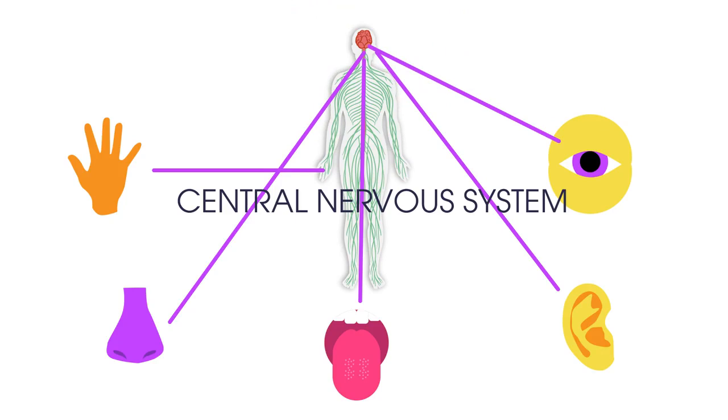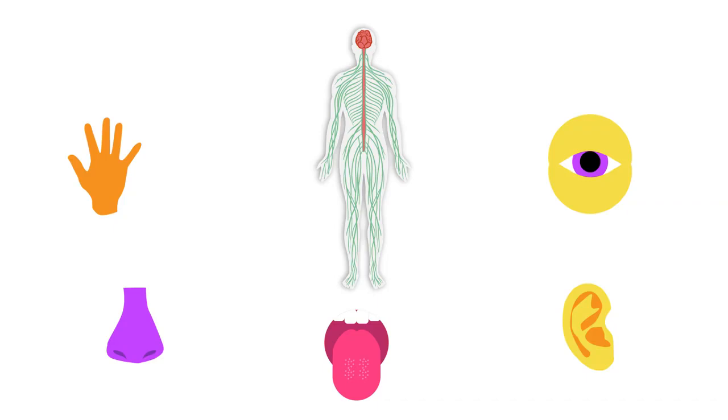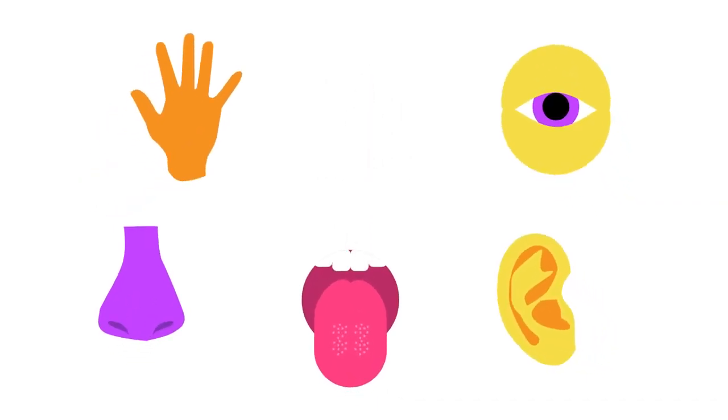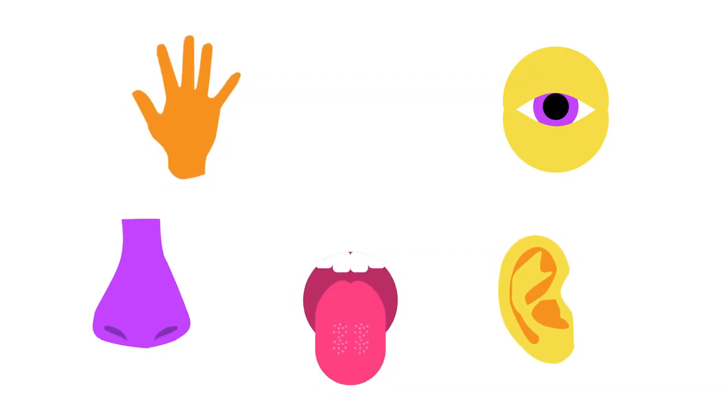There are different types of receptor cells which are sensitive to different stimuli. Humans have five senses: sight, hearing, taste, touch and smell.